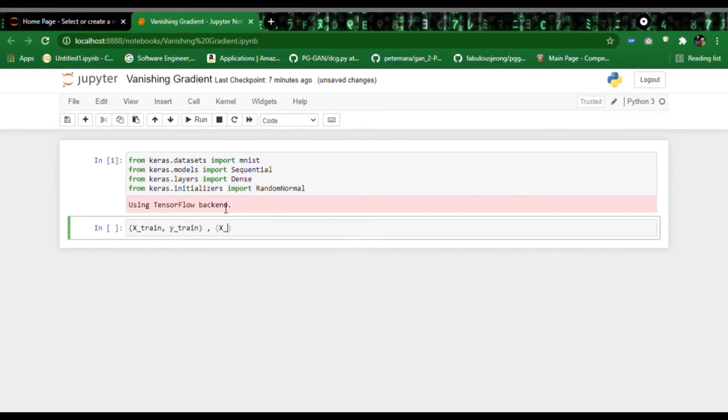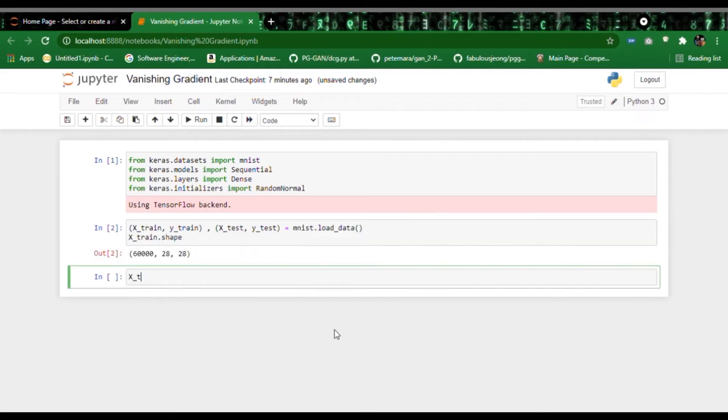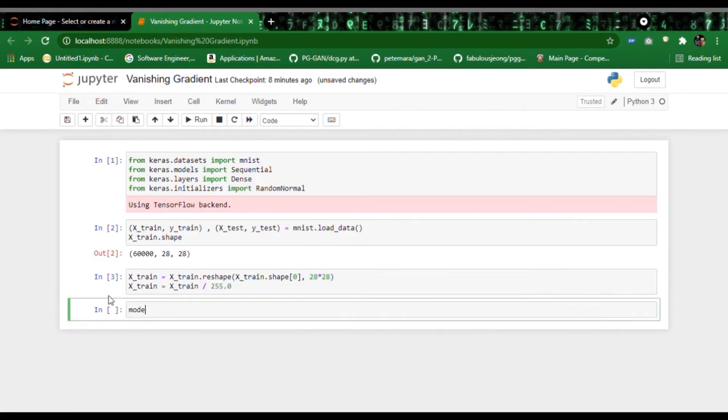But this is not the end of the story. Let's prove it experimentally. Load the MNIST dataset first. Reshape each point to a vector because those are images and we are not going to make a CNN model for this experiment. Do the normalization and now get to the modeling part.